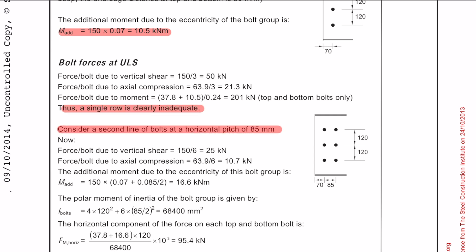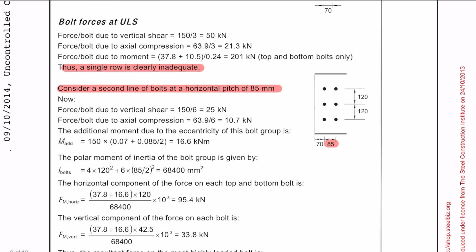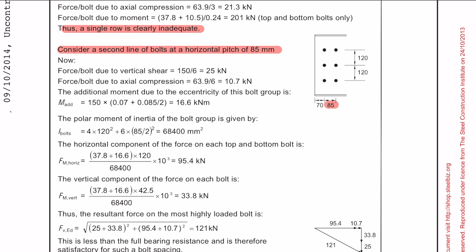So let's add another line of bolts with a 85mm horizontal spacing. The additional moment due to eccentricity is also going to increase because we're increasing the distance to the center of the bolt group.